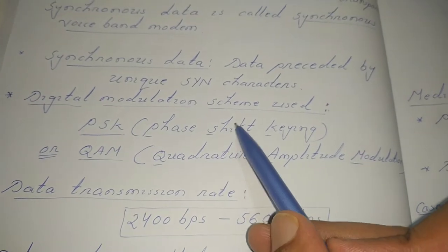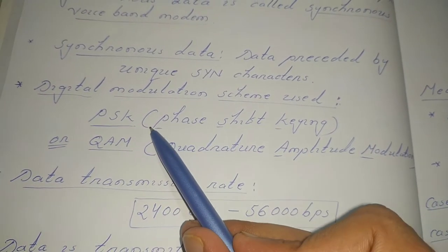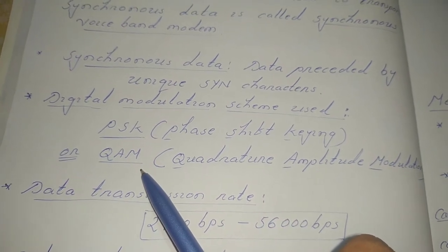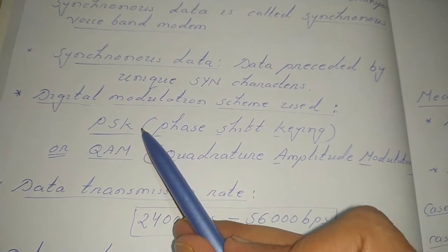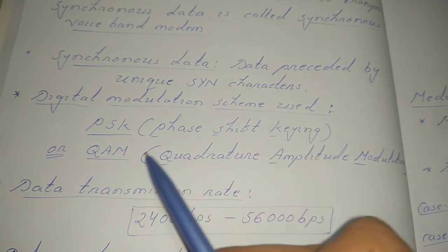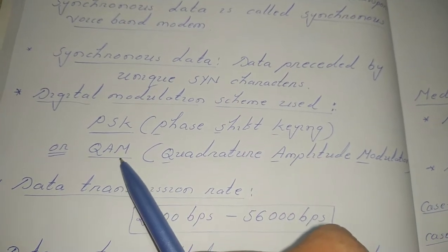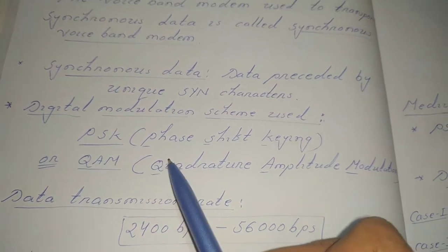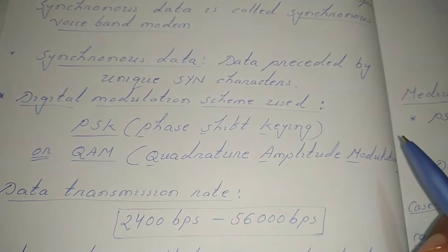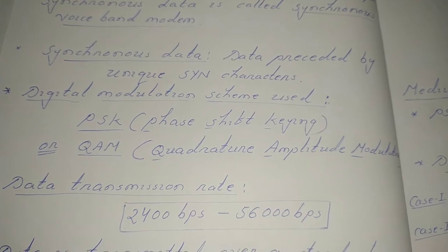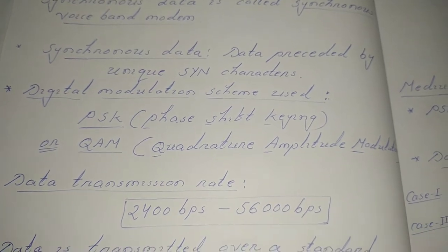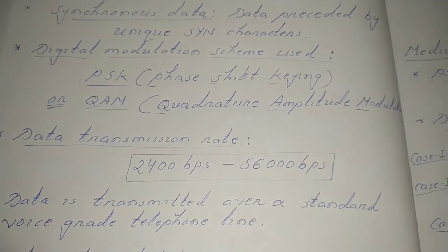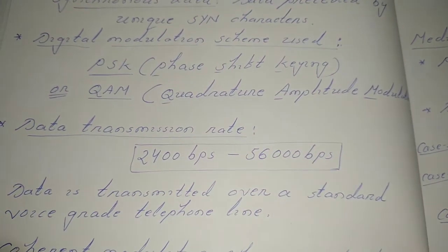The digital modulation schemes used here are PSK and QAM — either one. PSK is Phase Shift Keying and QAM is Quadrature Amplitude Modulation. Recall that in the asynchronous voice band modem we use Amplitude Shift Keying or Frequency Shift Keying as the digital modulation technique.